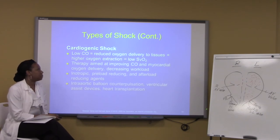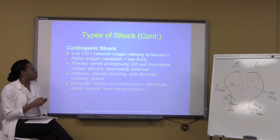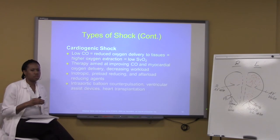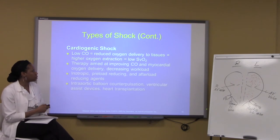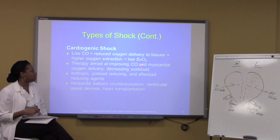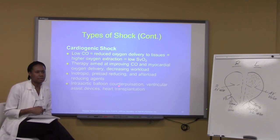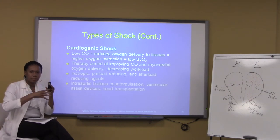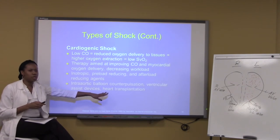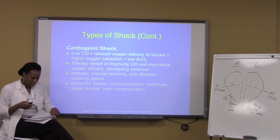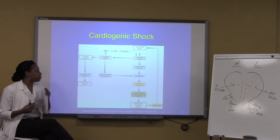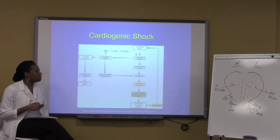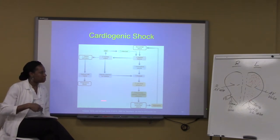With cardiogenic shock, reduced oxygen results from low cardiac output. The goal of treatment is to increase cardiac output and decrease workload. Therapy is aimed at improving cardiac output, getting oxygen delivery to the heart muscle, and decreasing workload. Treatments include medications, balloon pumps, stenting, or other devices to open up vessels and restore blood flow. If needed, a patient may require a heart transplant. A diagram illustrates how myocardial infarction affects cardiac output and stroke volume.